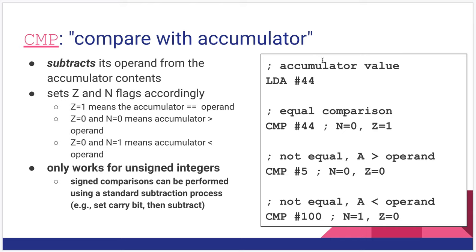So over here, we have some examples. I'm going to load 44 into the accumulator. I compare 44 against that, so it should be an equal comparison. N is set to zero because it's not a negative result. Z is set to one because it is a zero result. I'm going to compare against an immediate of five. So five is less than 44. Negative flag is set to zero because it is a positive result. 44 minus five is positive, so the negative is not set. Of course, it's not zero, so the Z flag is not set. And the last one, we have 44 minus 100, which would be a negative result. So we set the N flag to one, and of course, zero's flag is still not set because it's not a zero result.